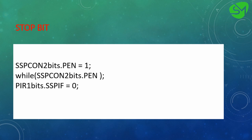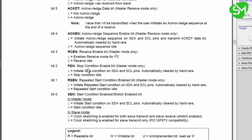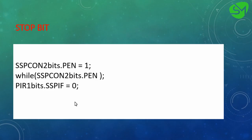For establishing the stop bit, we use a similar procedure except we set the PEN bit from the SSPCON2 register. The PEN is the stop condition enable bit; it initiates the stop condition and is automatically cleared by hardware. So we wait for PEN to go low, and once it does, we clear the SSPIF flag.